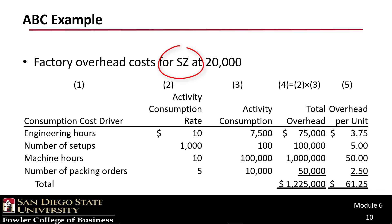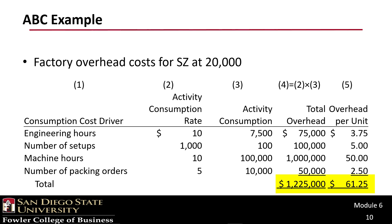For SZ, we follow the same process using SZ data. Total overhead for engineering is $75,000. For setups, machine hours gives $1 million, and packing orders gives $50,000. The total overhead assigned to SZ at 20,000 units is $1.225 million, or $61.25 per unit.